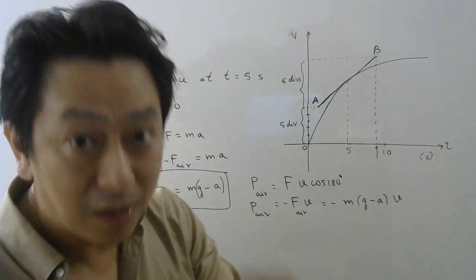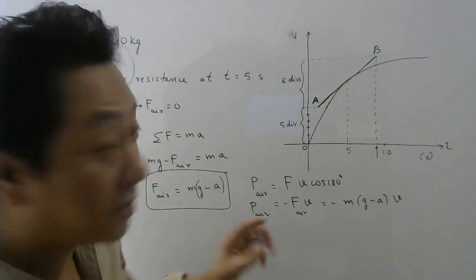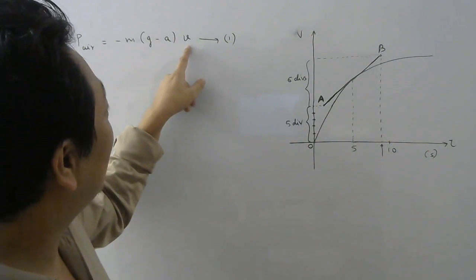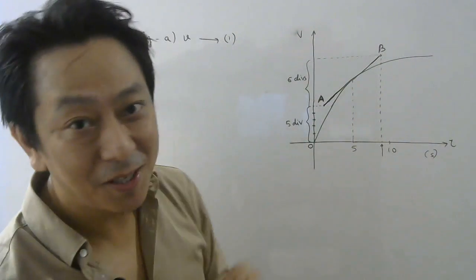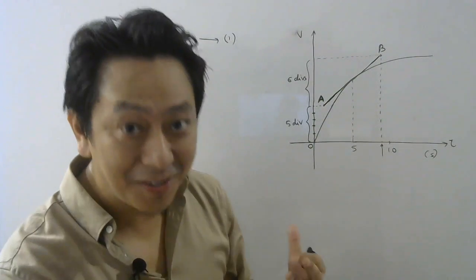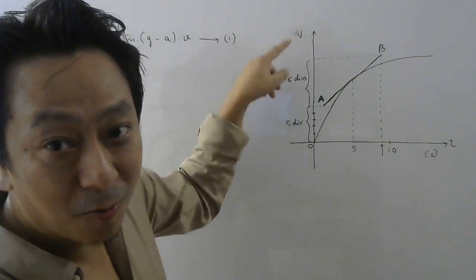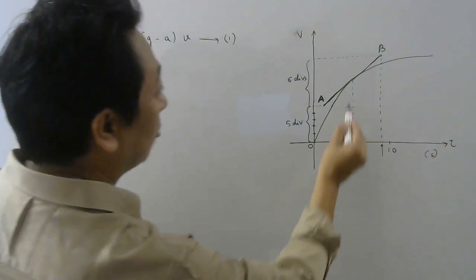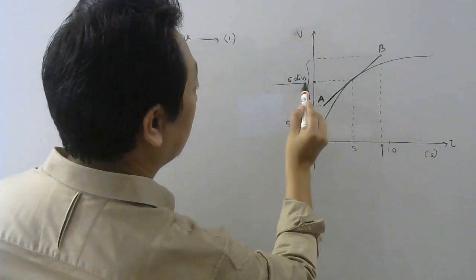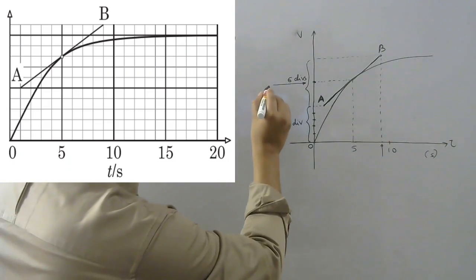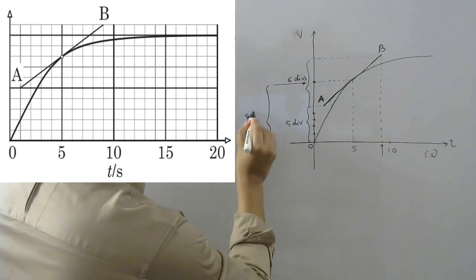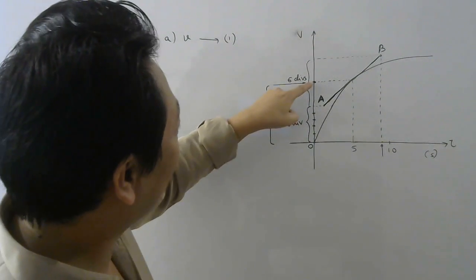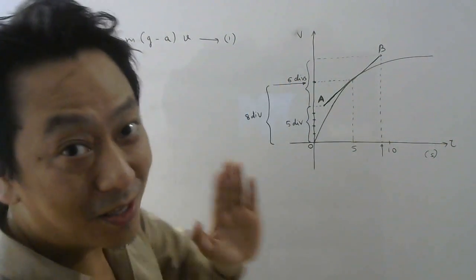That is why they have asked for the power of air resistance at a specific time: t equal to 5 seconds. To find the power at t equal to 5 seconds, I need to find velocity and acceleration at that instant and then substitute. But the problem is the experimenter did not give us the value of one division of velocity. Though at t equal to 5 the velocity corresponds to 8 divisions on the graph, we don't know the actual velocity value.